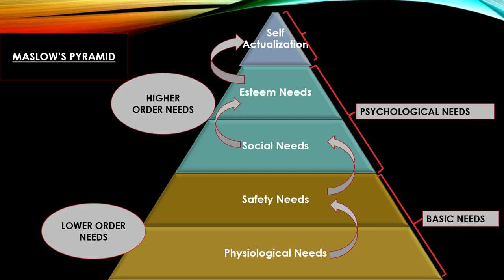Maslow also clubbed these needs into basic needs, psychological needs, and self-fulfillment needs. Physiological and safety needs are lower order needs and can also be called basic needs. Social needs are psychological needs, and self-actualization needs fall in the category of self-fulfillment needs. An individual must satisfy each lower order need before moving up the ladder, until his self-actualization needs are fulfilled.